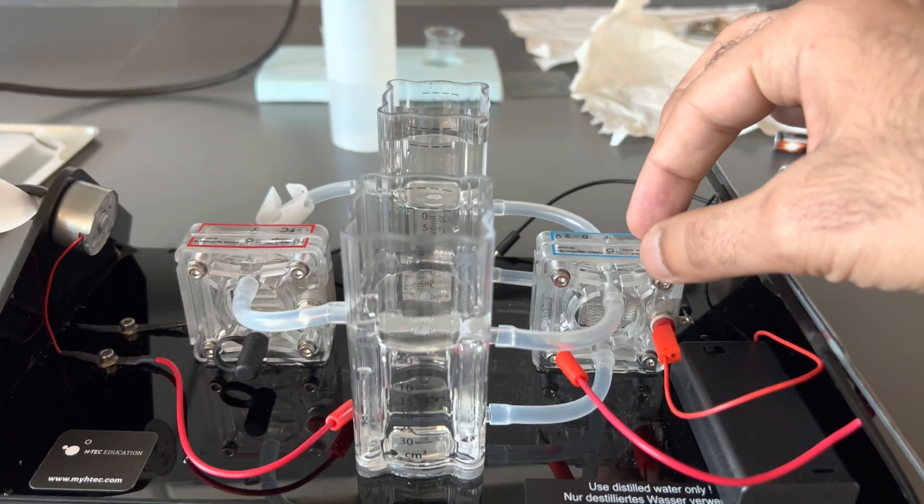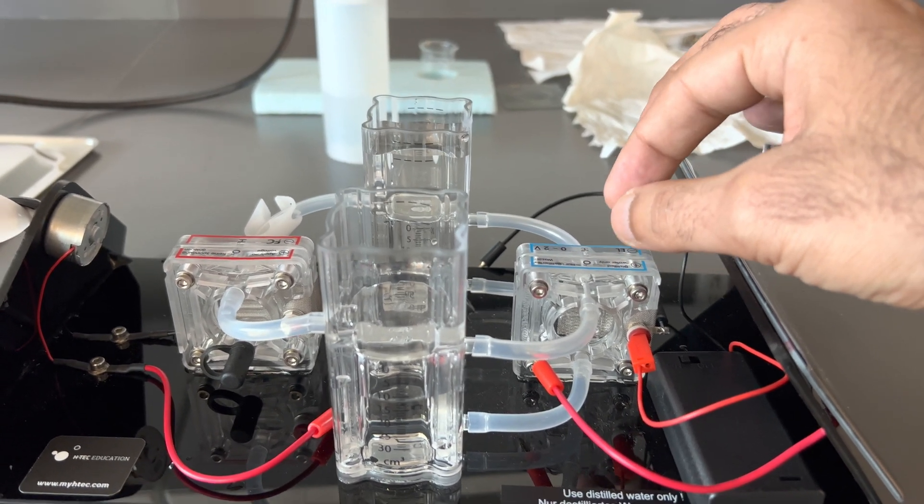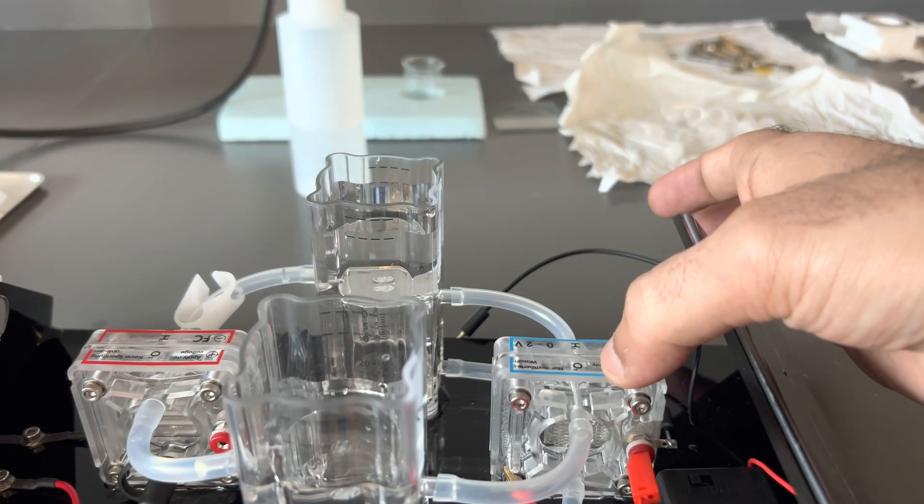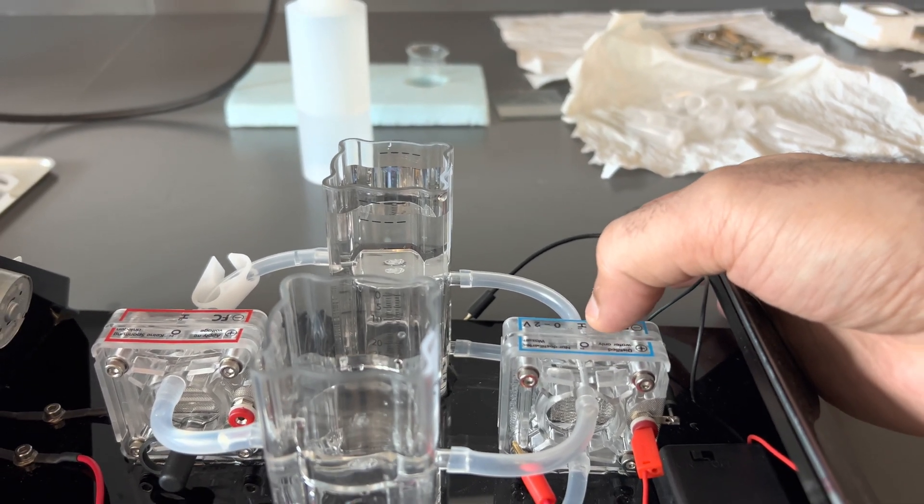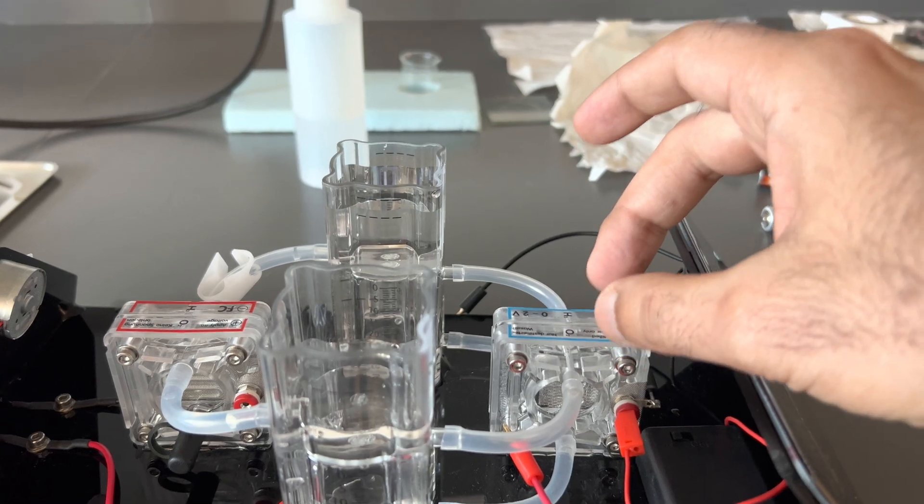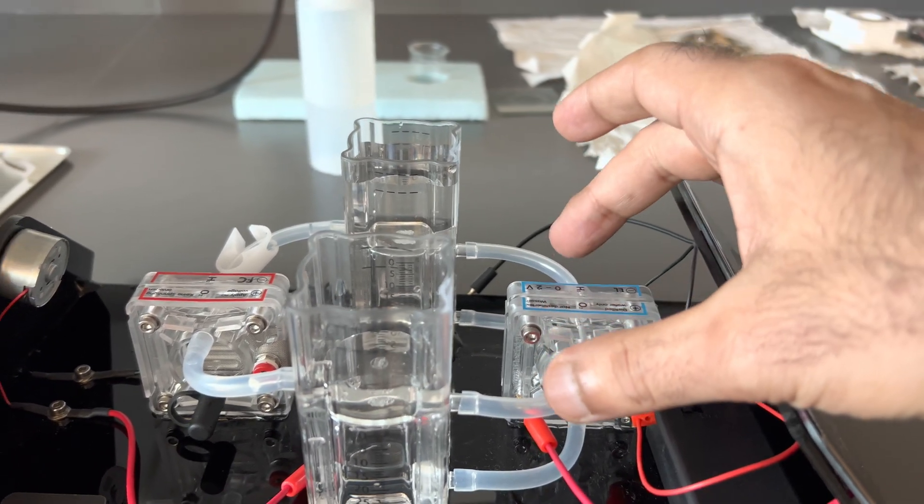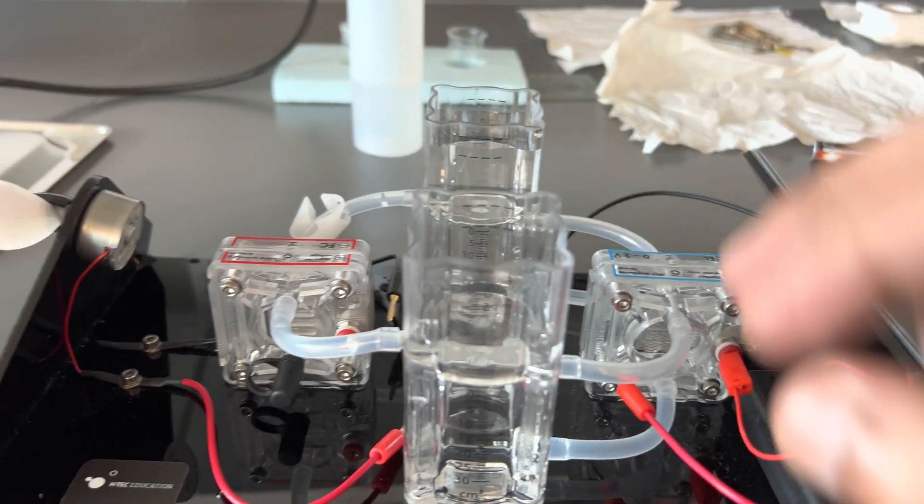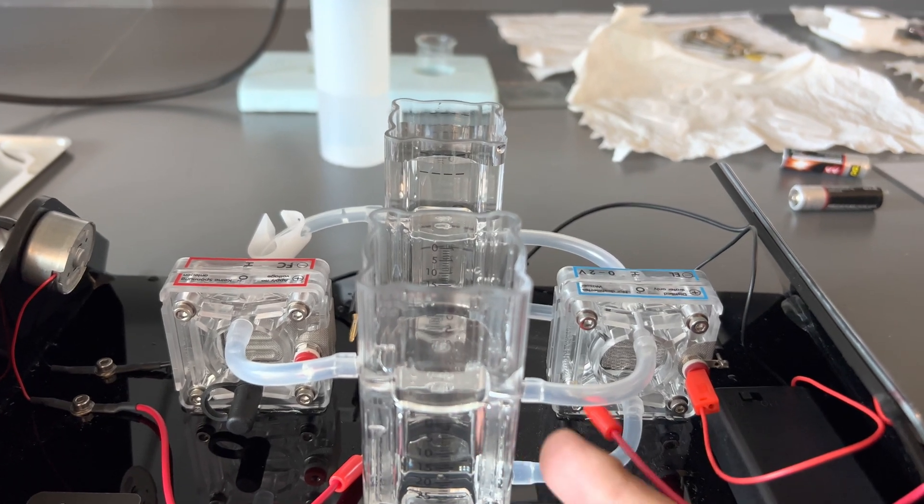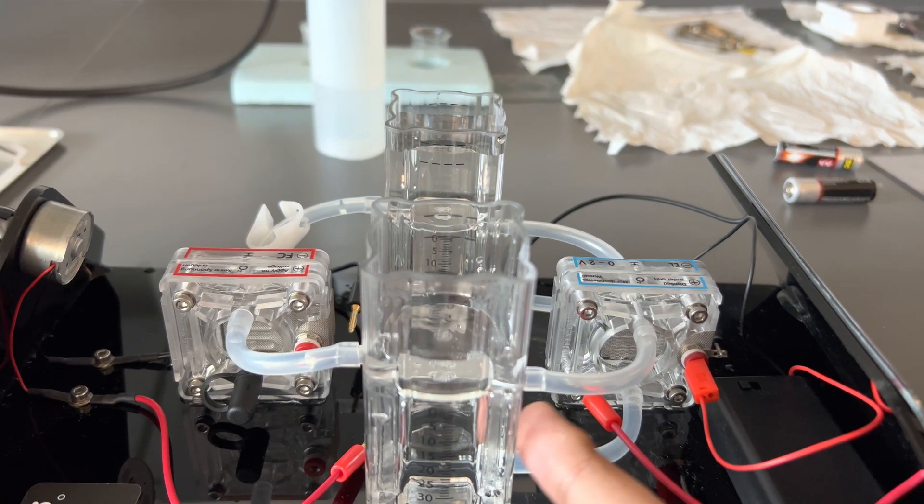Electrolyzer produces the individual components of water, that is oxygen here, and on this side you can see O2 written here, and then hydrogen over there. So hydrogen and oxygen, it gets broken into its individual components. They come here, they get stored here, so this is the water that's actually getting broken into hydrogen and oxygen.